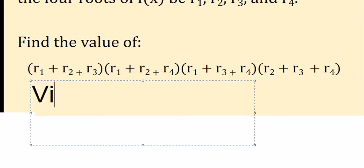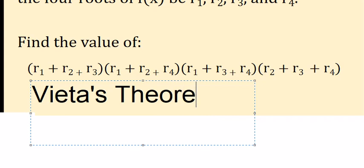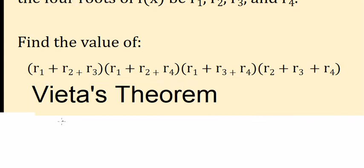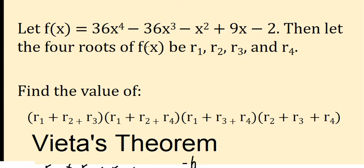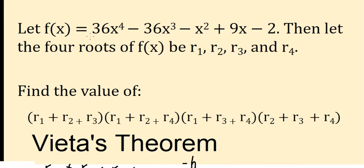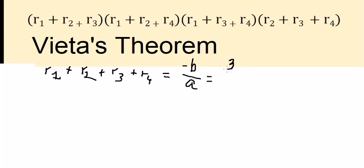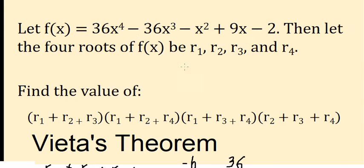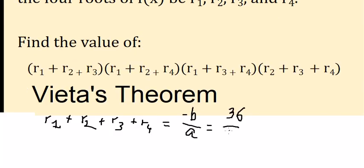First, we need to apply Vieta's Theorem. So we have r₁ + r₂ + r₃ + r₄ equals negative b over a. We know that the coefficient b is negative 36, and coefficient a is 36. So we got 36, and the negative with the negative gives positive, so you got about number 1.